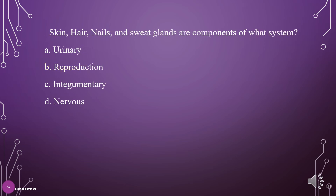Skin, hair, nails, and sweat glands are components of what system? A. Urinary, B. Reproduction, C. Integumentary, D. Nervous. The answer is C: Integumentary System.